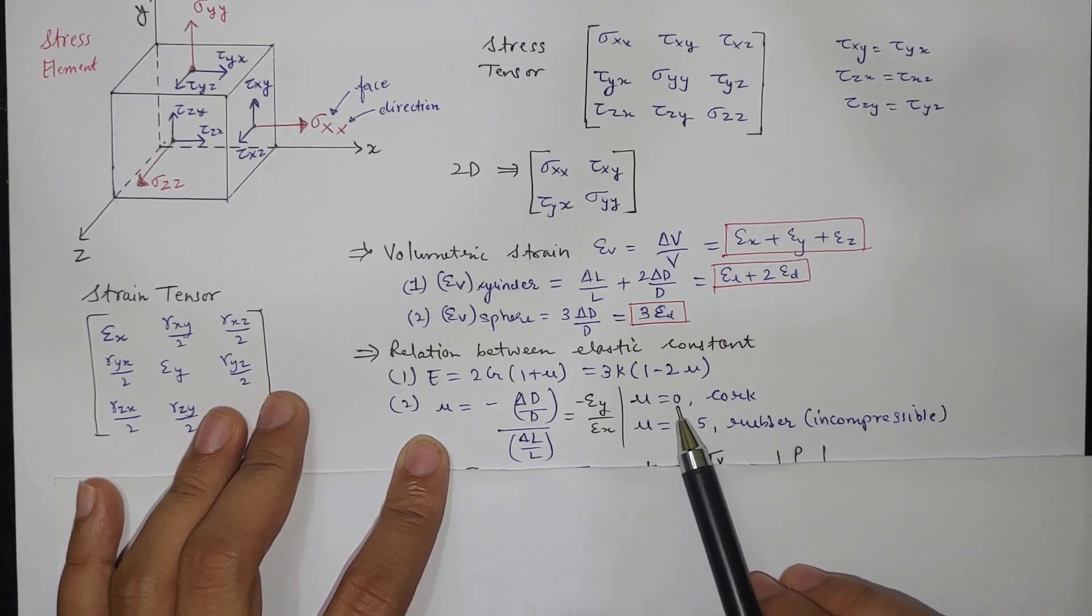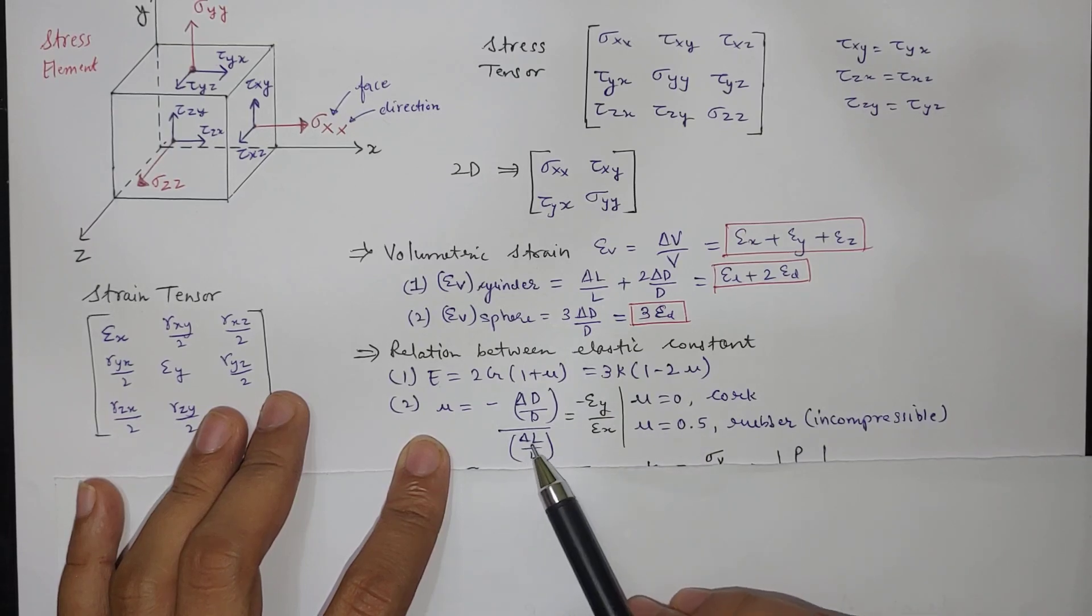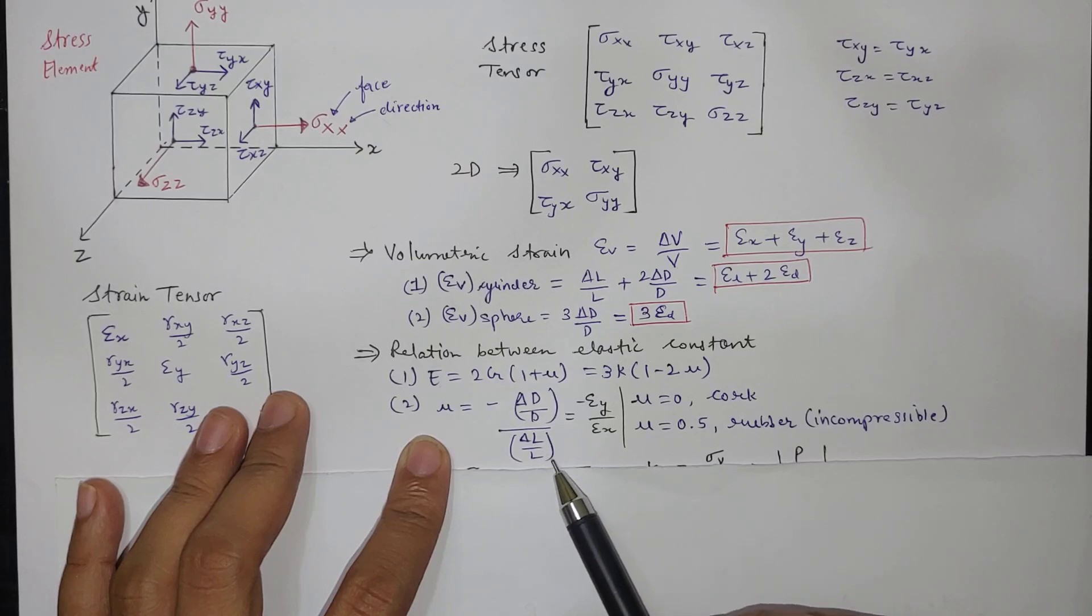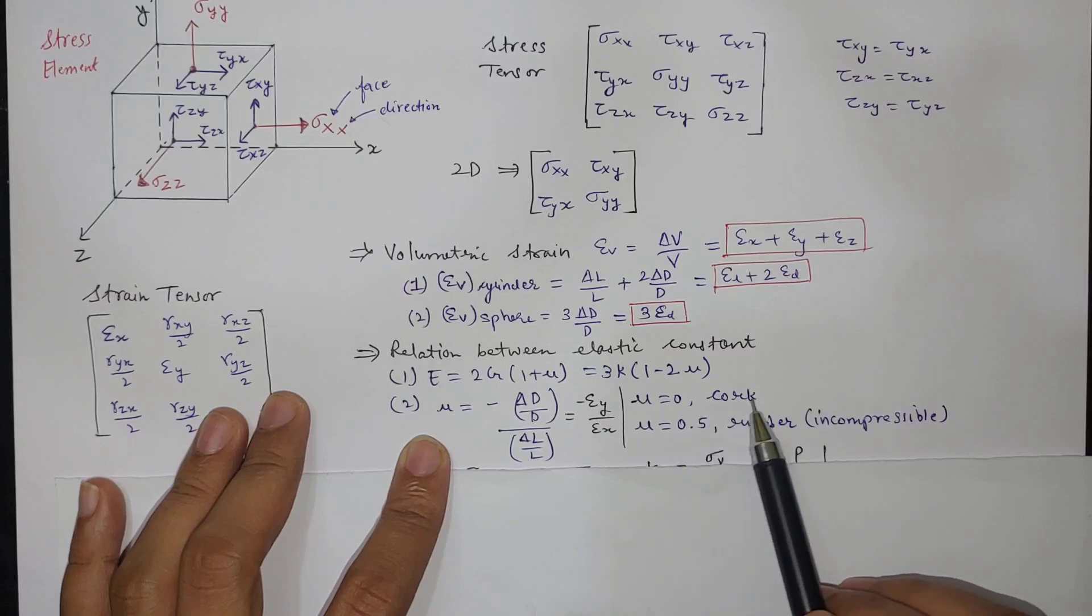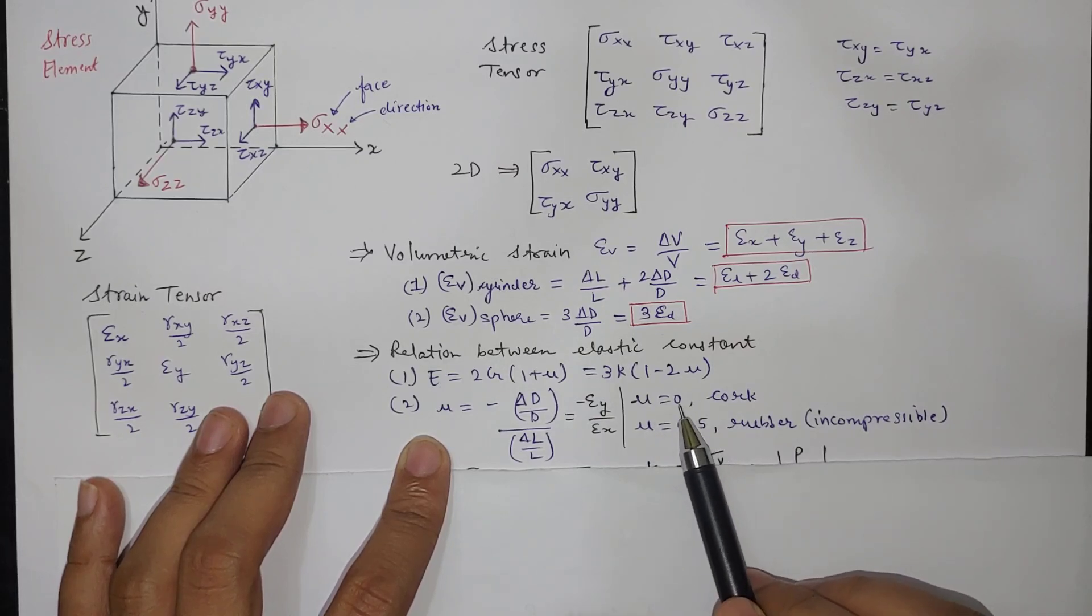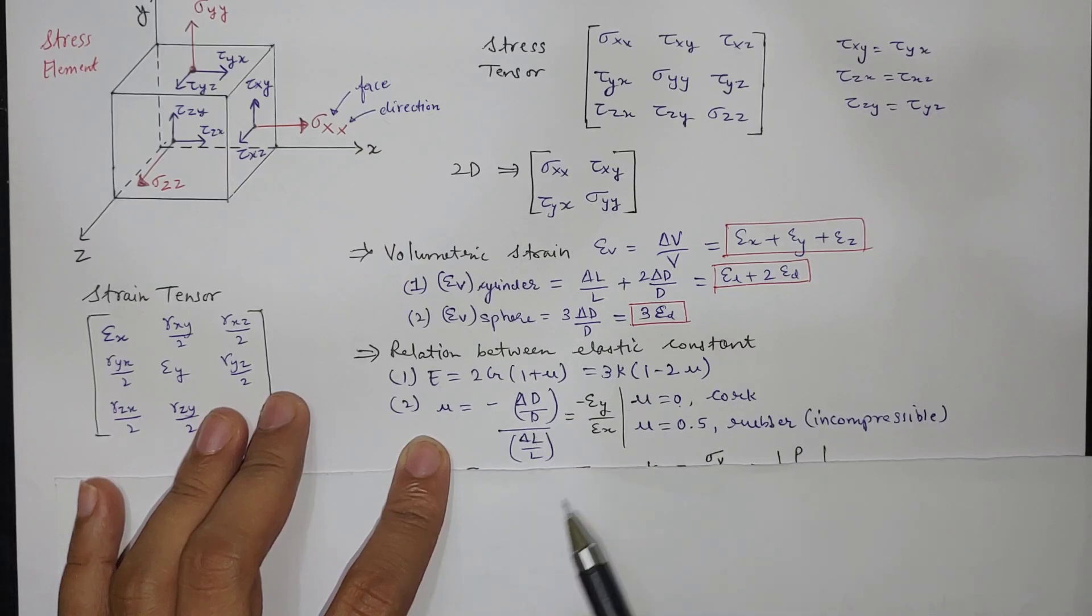For cork material mu equal to 0 means if you change length there will be no change in diameter. So if you change the length of the object there will be no change in the diameter. So mu will be equal to 0. And cork is used in wine bottles and some bottles where the property is required where if you compress it its diameter should not change.